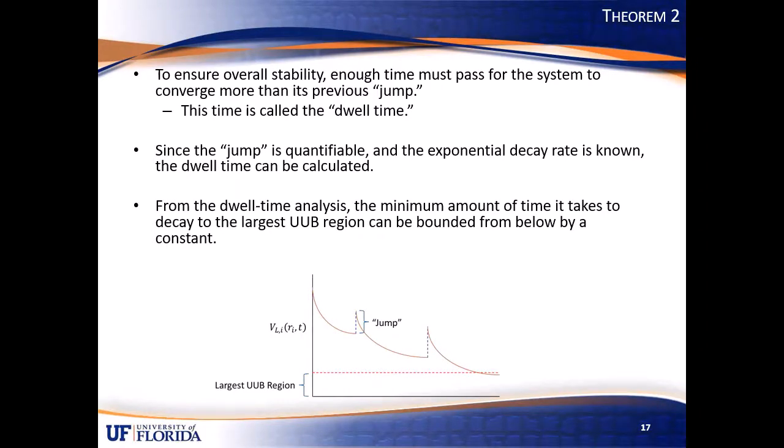In theorem two, we develop a quantifiable dwell time condition that dictates how long we must remain in one subsystem before switching to another subsystem. We can calculate the dwell time only because the exponential decay rate and size of the jump are known. Furthermore, knowing the decay rate, jumps and number of switches, the time it takes to reach the largest UUB region, which is shown in the figure, can also be bounded. So the significance in lower bounding the time before reaching the UUB region is useful in telling us what the best case minimum time for convergence is.